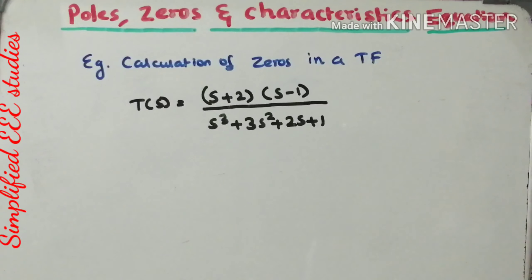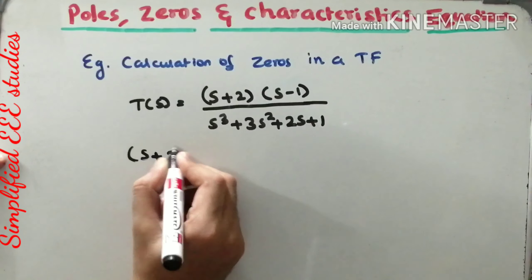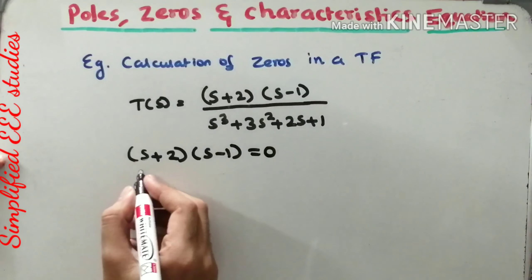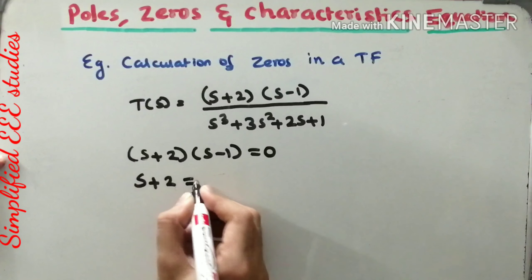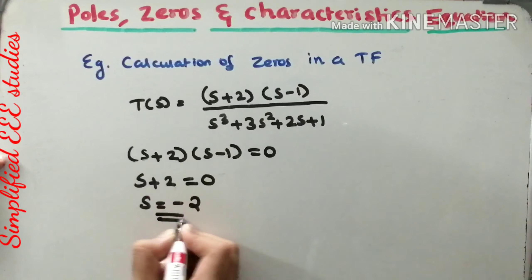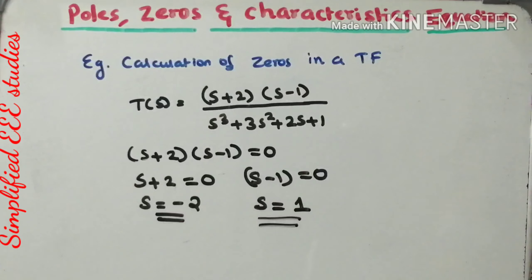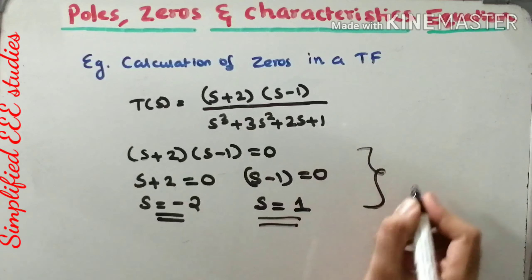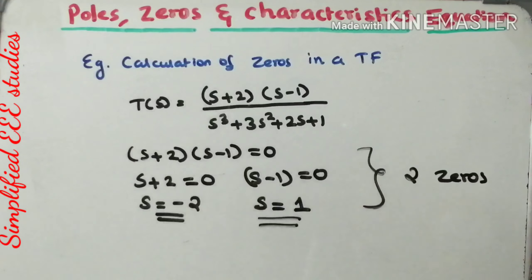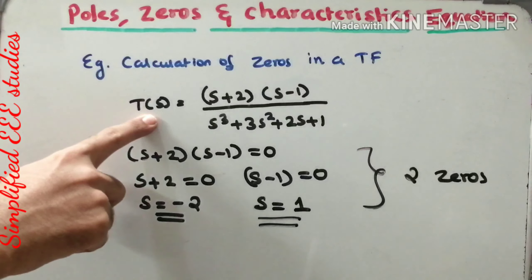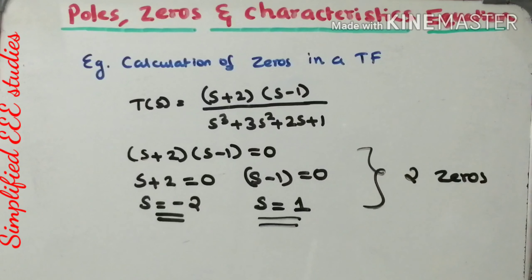Consider the transfer function T(s) = (s + 2)(s - 1) / (s³ + 3s² + 2s + 1). To calculate zeros, equate the numerator to zero: (s + 2)(s - 1) = 0. From s + 2 = 0, we get s = -2. From s - 1 = 0, we get s = 1. We conclude that there are two zeros, located at s = -2 and s = 1. This is how to calculate the position and number of zeros in a given transfer function.